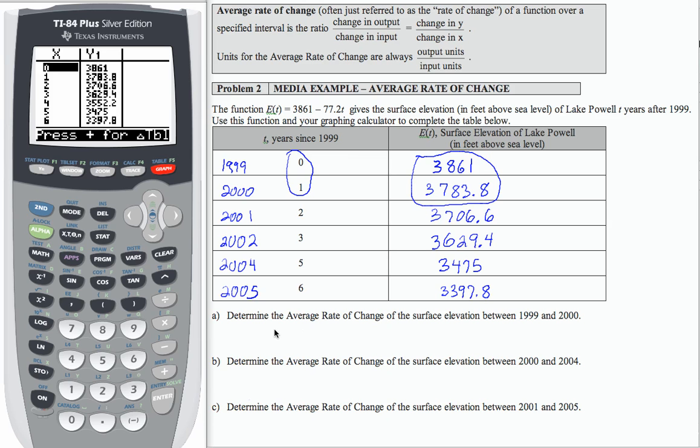To compute the change in output, I'm going to compute 3,783.8 minus 3,861 divided by 1 minus 0. If I perform that subtraction, I get negative 77.2. And the units are always the units of the output, which is feet, over the input, which is years.